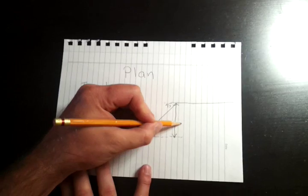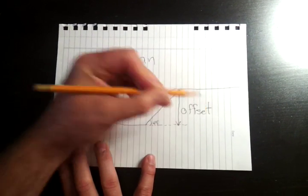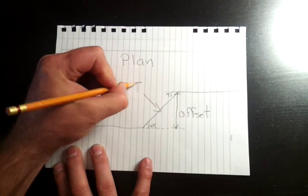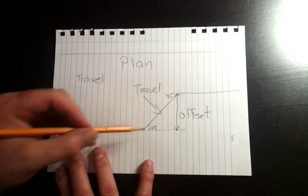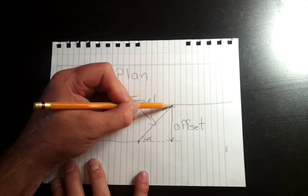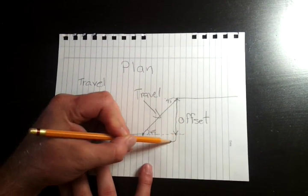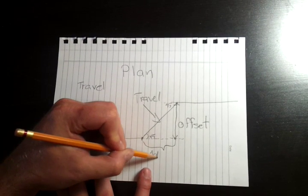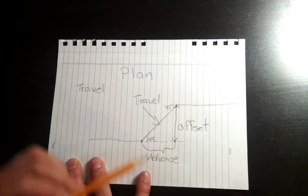And then we have the travel. The third part of the triangle is we stopped here, we went on a forty-five over to this point, and we have a point. So we basically moved from here to here in this distance. That's what's called our advance.